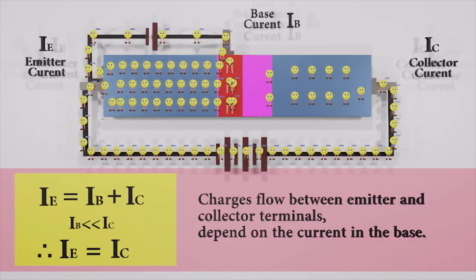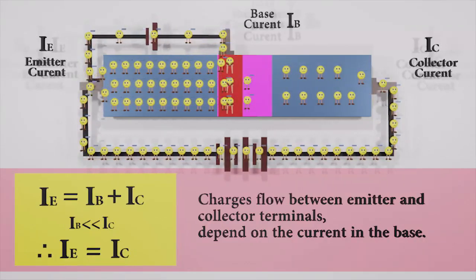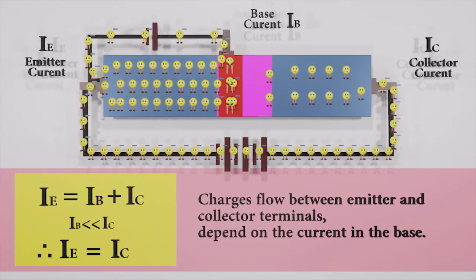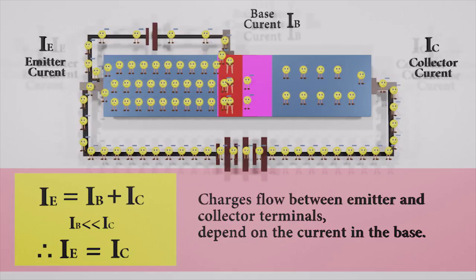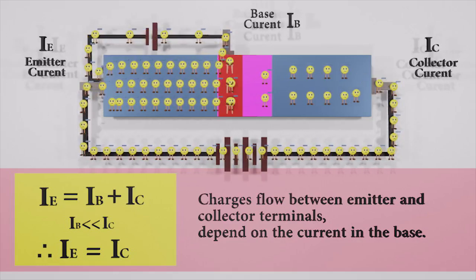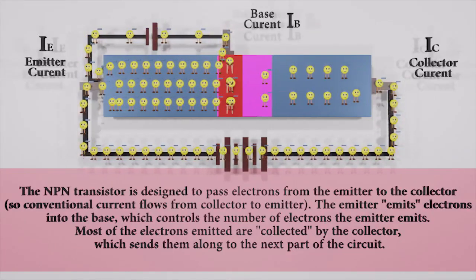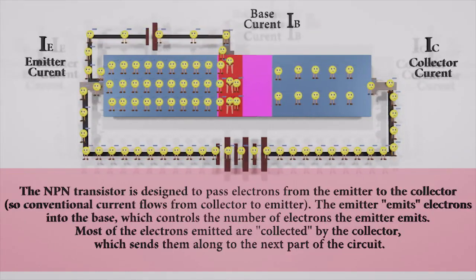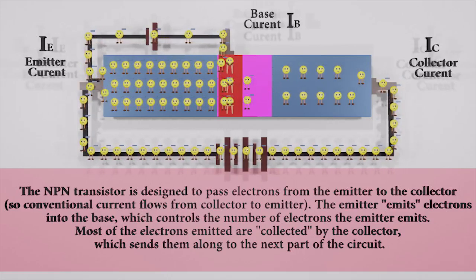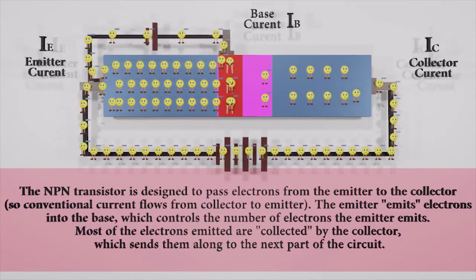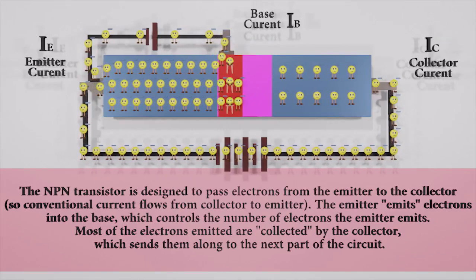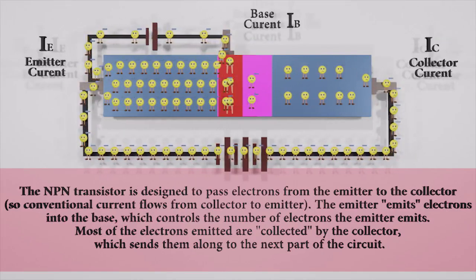Now we know applying a small voltage to the base, the current through the collector and emitter can be controlled. The NPN transistor is designed to pass the electron from the emitter to the collector. The emitter emits electrons into the base, which controls the number of electrons the emitter emits. Most of the electrons emitted are collected by the collector, which sends them along to the next part of the circuit.